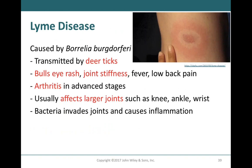Lyme's disease is caused by the bacteria Borrelia burgdorferi, carried and transmitted by deer ticks. The bacteria invade the joints and cause inflammation, which brings in immune cells and causes breakdown of joint contents. Lyme's disease is characteristically diagnosed by a bullseye rash and also presents with joint stiffness. If left untreated, it can eventually cause arthritis. It's important to get these conditions treated as soon as possible.